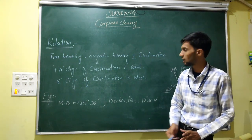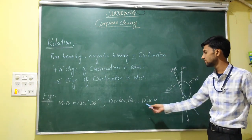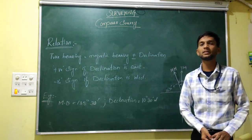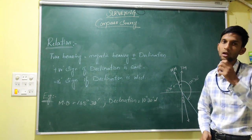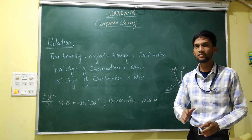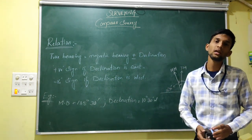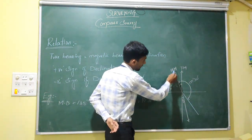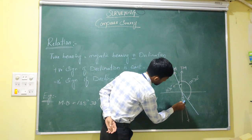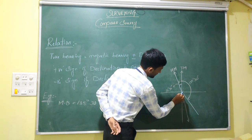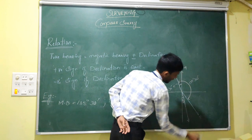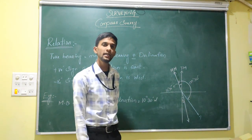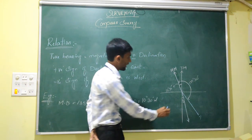Let's see an example. The magnetic bearing is given and the declination is given as 10 degrees 30 minutes west, and the magnetic bearing is 135 degrees 30 minutes. As per our formula, true bearing equals magnetic bearing plus or minus declination. Since the declination is west, we subtract. We can draw a figure showing the magnetic meridian and the 135 degrees 30 minutes bearing line, with the declination of 10 degrees 30 minutes on the west side.